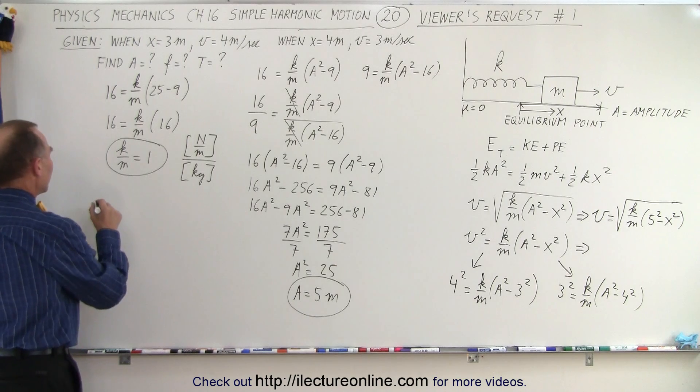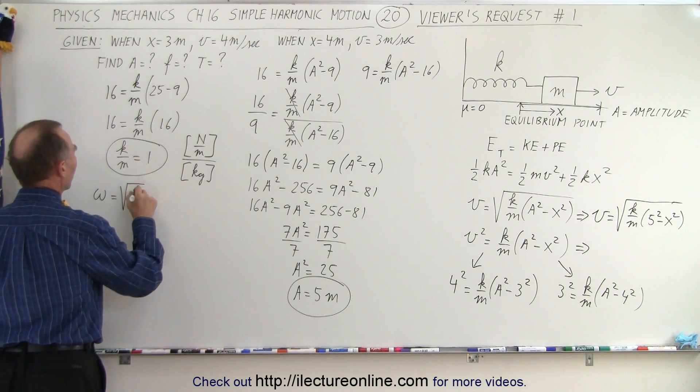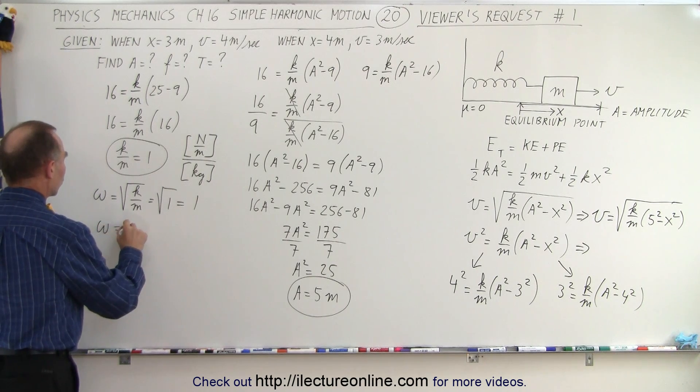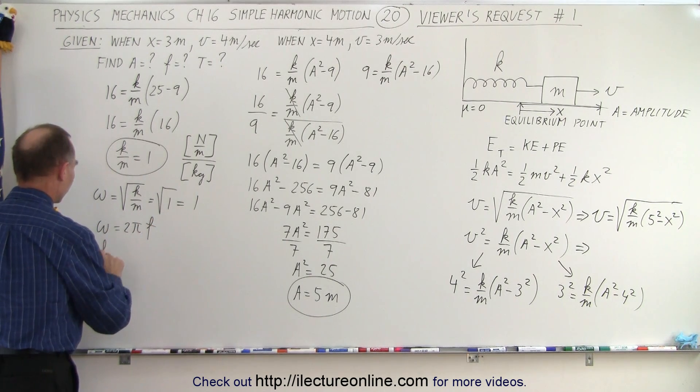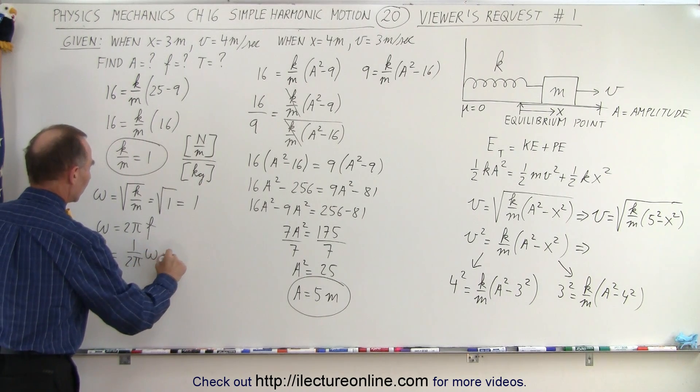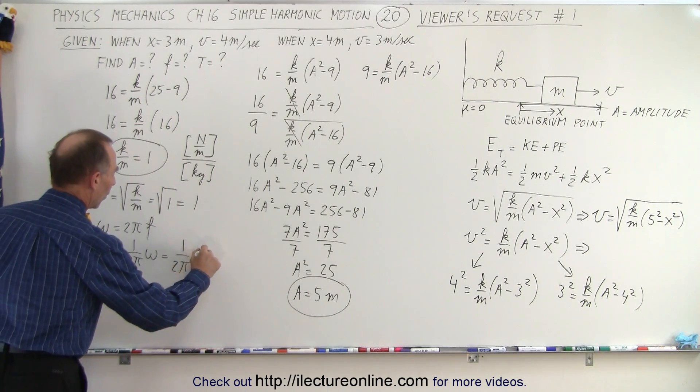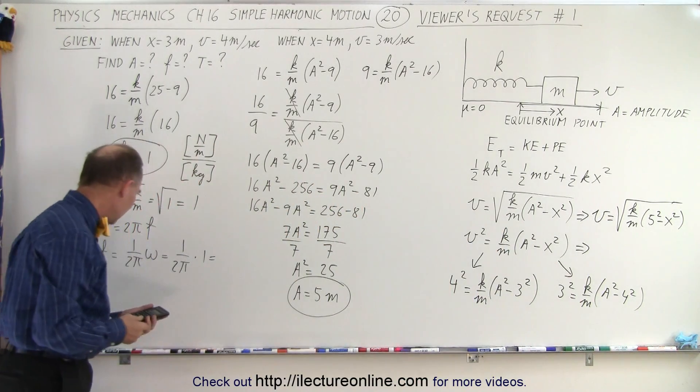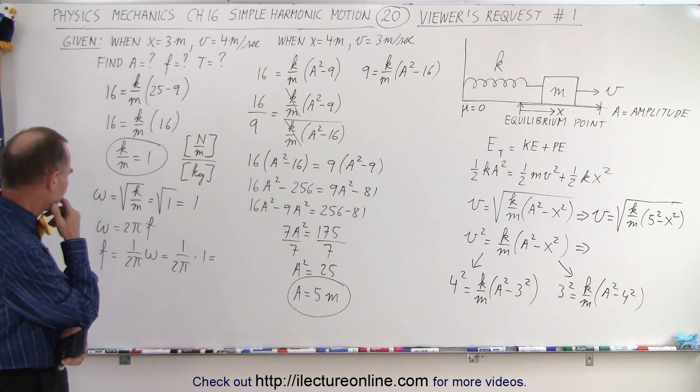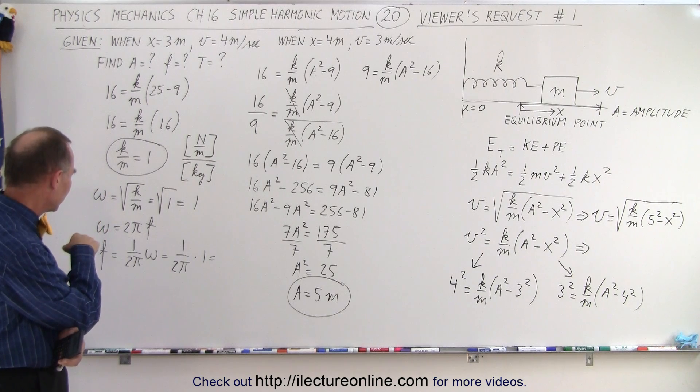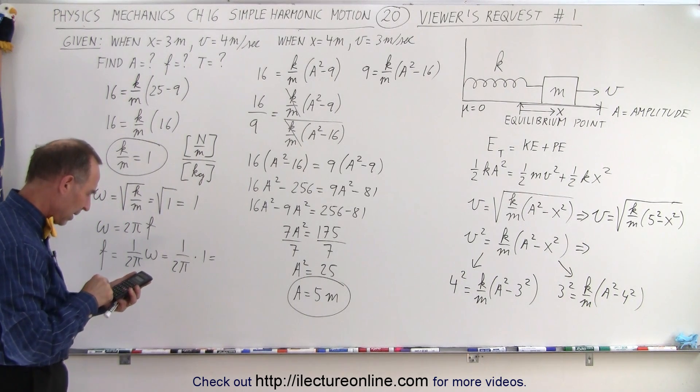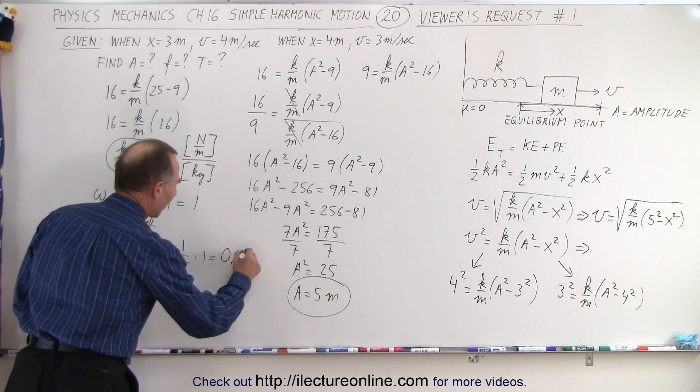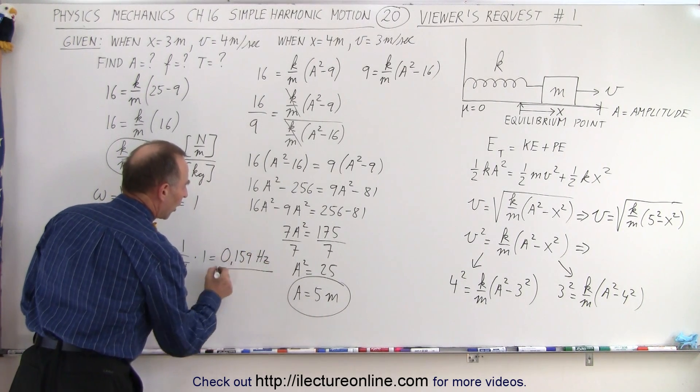So then another thing we should know is that the angular frequency omega is equal to the square root of k over m, which of course is equal to the square root of 1, which is equal to 1. And then we know that omega equals 2 pi times the frequency, or the frequency is equal to 1 over 2 pi times omega, which is equal to 1 over 2 pi times 1. And if we then solve for that, and for that we need a calculator, f would be omega divided by 2 pi. So the frequency would be 1 divided by 2 divided by pi, which would be 0.159, so 0.159 hertz, or oscillations per second.